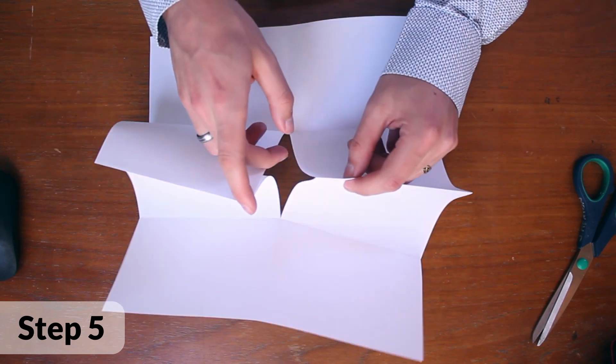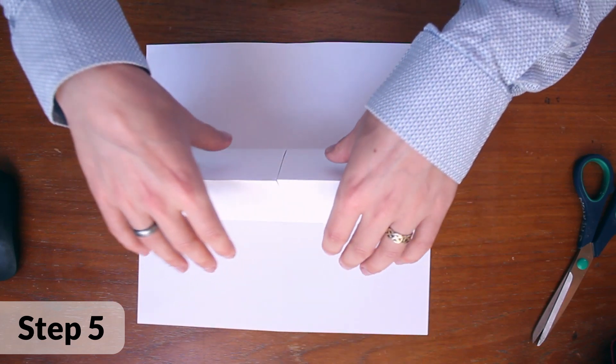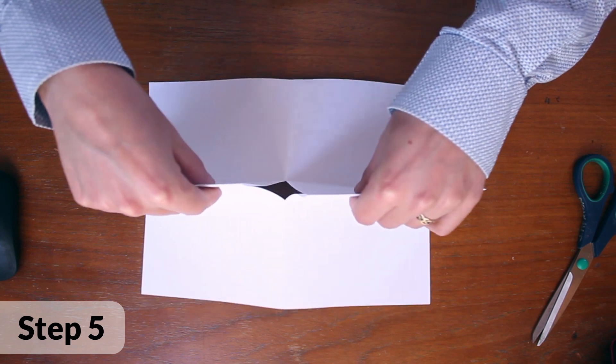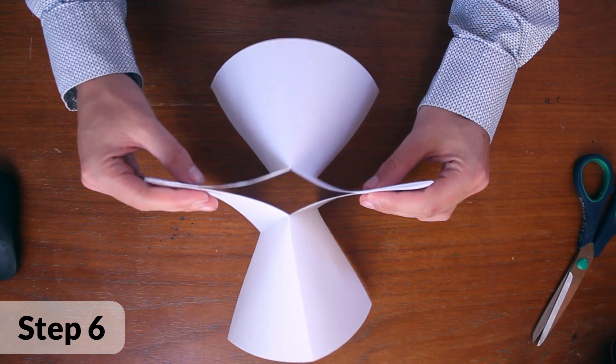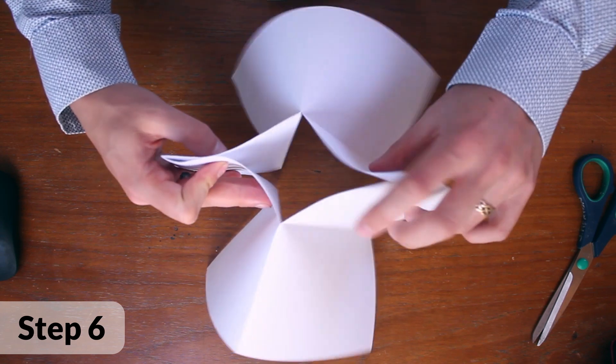Fold the paper in half following the previously made creases. This effectively opens up that cut you just made. You should now have four wings. These form a letter X if you look at it from this angle.